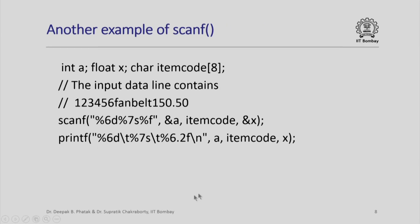Consider this example: I have an integer variable a, a floating point variable x, and a character array item code. Suppose the input data line contains "12345fan belt150.50" — notice there is no blank in between. If I use cin to read these values it will get confused, because it cannot distinguish between the integer value, the character string, and the floating point value. However, using scanf I can prescribe the format string "%6d %7s %f", meaning the first 6 characters are converted to an integer, the next 7 characters are converted to a string, and the remaining characters are converted to a floating point number.